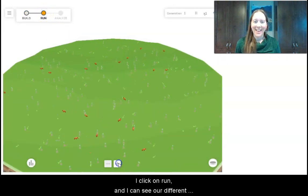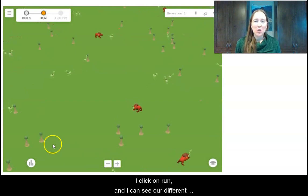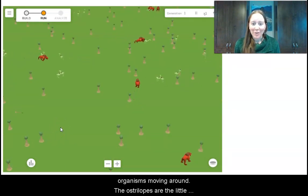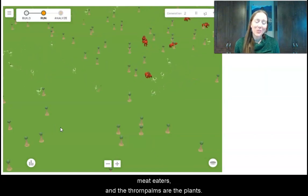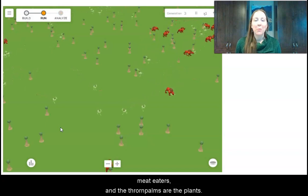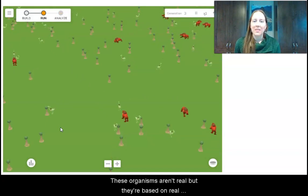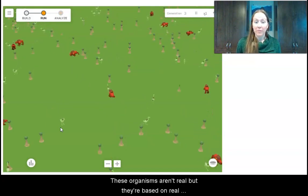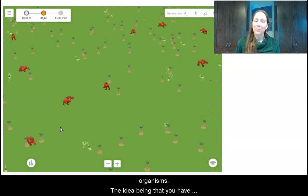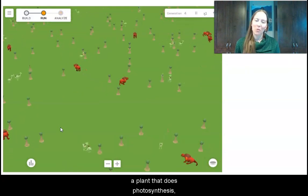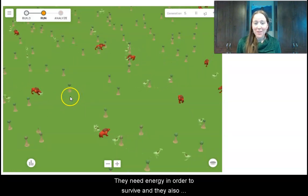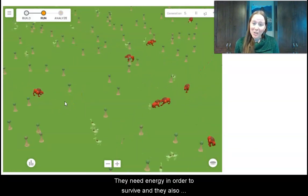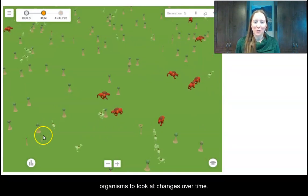So I click on run and I can see our different organisms. I've got ostrilopes, the little bird-like creatures, carnifons are the big red meat eaters, and the thorn palms are the trees. So these organisms aren't real, but they're based on real organisms. The idea being that you have a plant that does photosynthesis, an organism that eats plants, and an organism that eats other animals. They need energy in order to survive and they also reproduce. So we can use these organisms to look at changes over time.